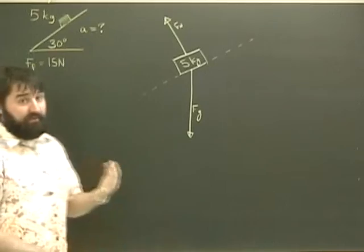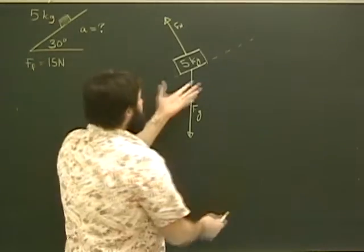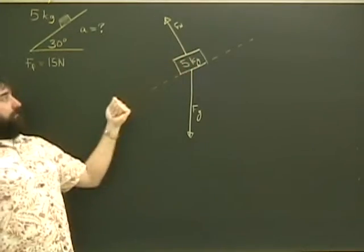Is there a rope or any kind of applied force? No, but there is friction. Obviously if this thing slides, it's going to slide down the ramp.